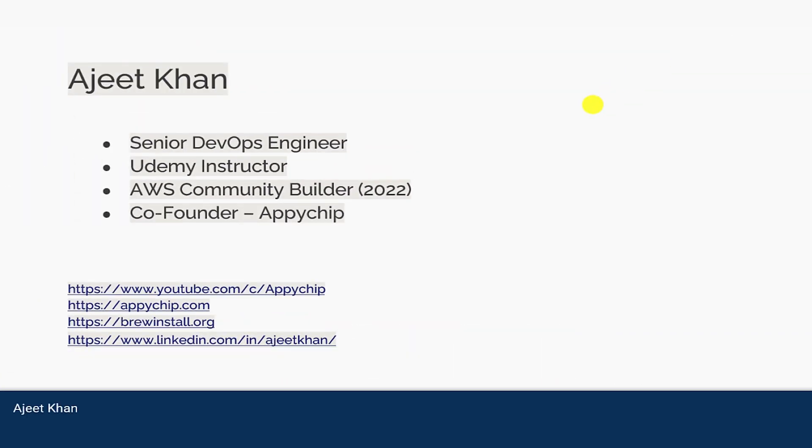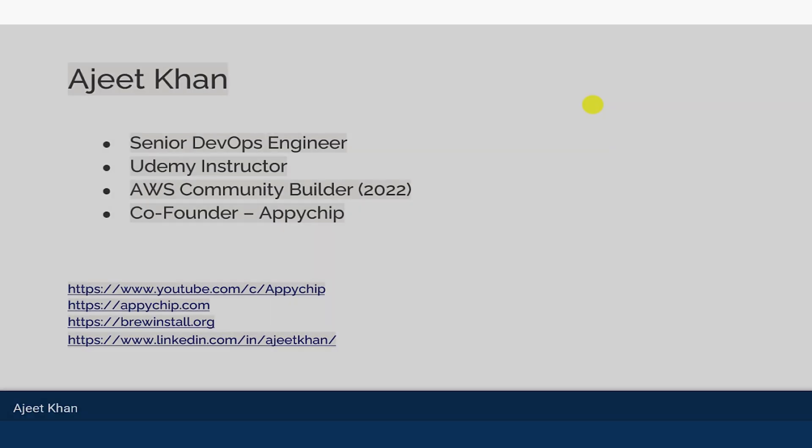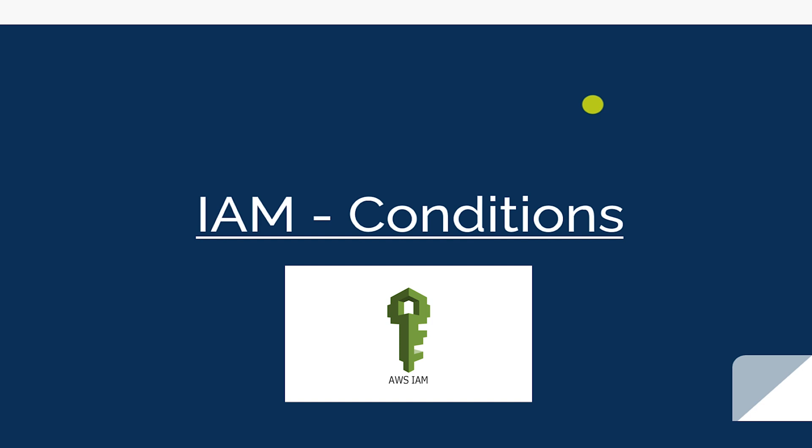Hi everyone, welcome back. I'm Ajit Khan, a senior DevOps engineer, a Udemy instructor, and a community builder of AWS. In this video we are going to talk about IAM conditions. IAM provides a few really helpful conditions that we can utilize to have more security in our AWS environment. We'll discuss this in terms of AWS exams as well, and you can also learn it to tighten the security in your AWS resources.